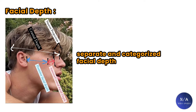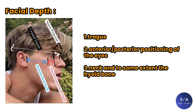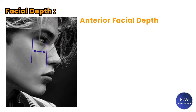Here we can see an example of separate and categorized facial depths. Certain landmarks are constant and cannot be changed, like the external auditory meatus, tragus, anterior-posterior positioning of the eyes, neck, and to some extent the hyoid bone. These are the constant reference marks. Everything else can be moved forward with properly modified surgeries. The most overlooked sub-category of facial depth is anterior facial depth, which is the projection or retrusion in the Lefort II region.